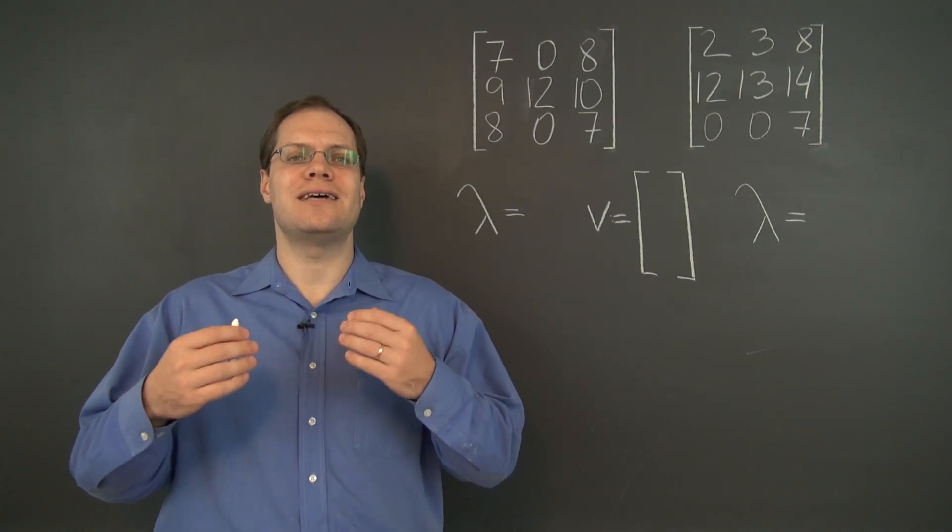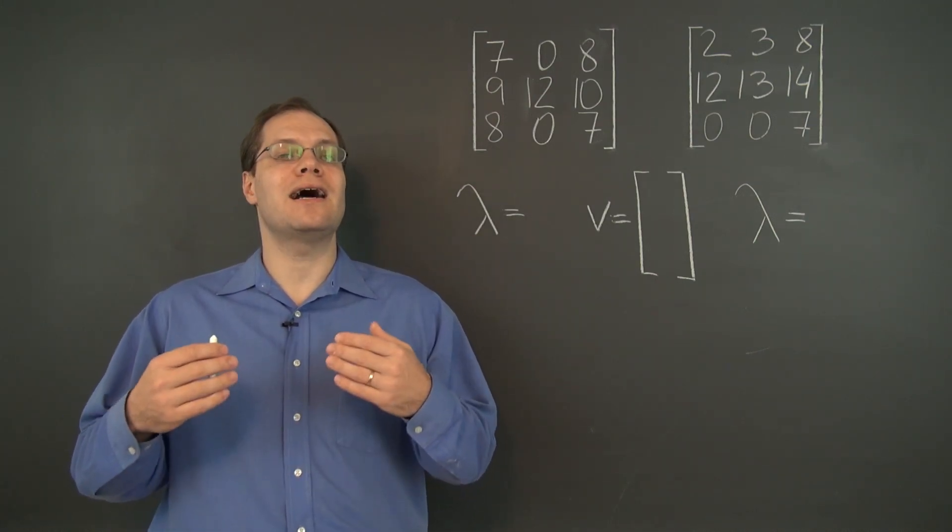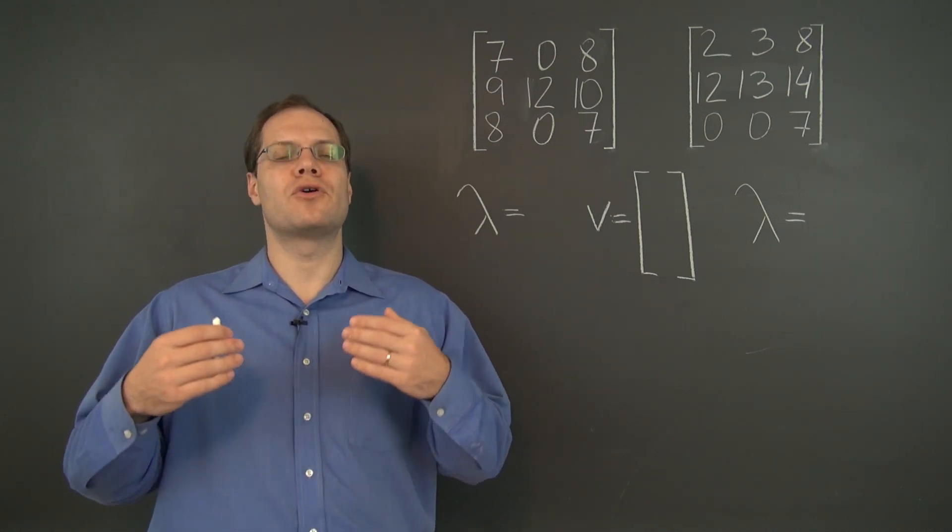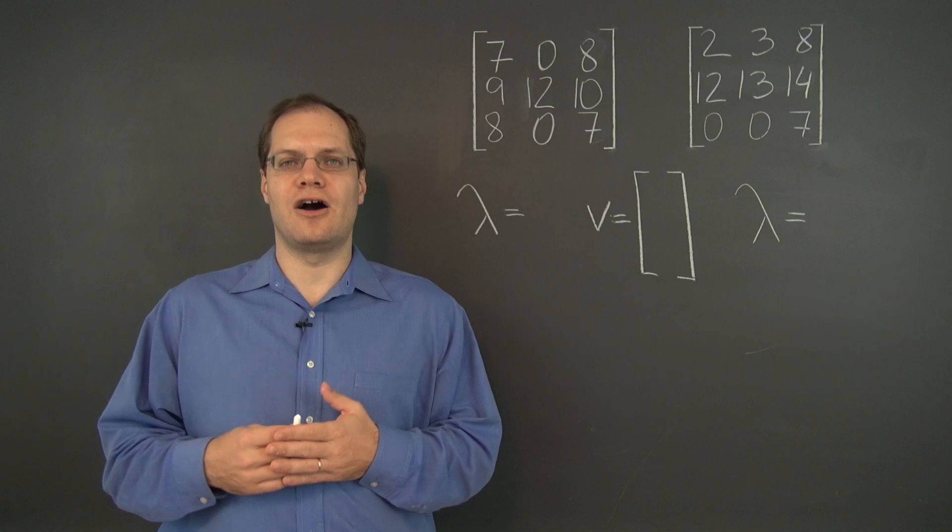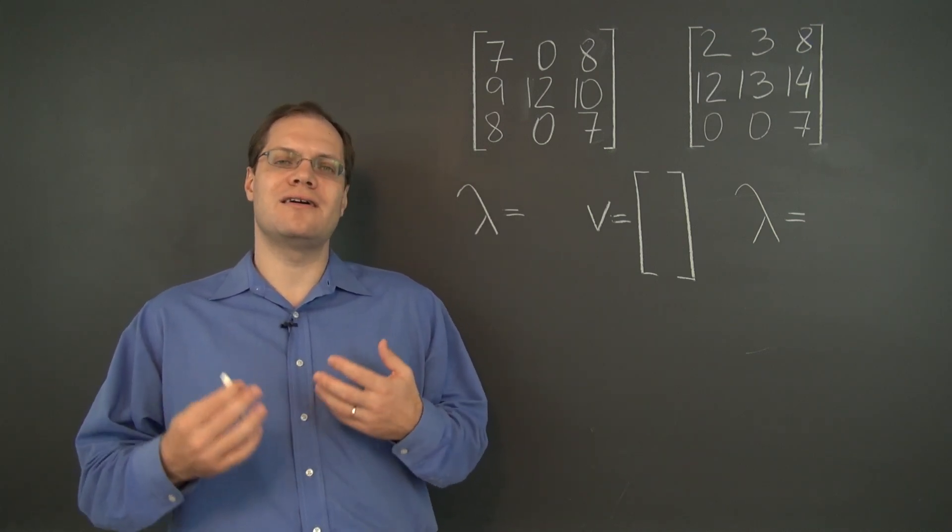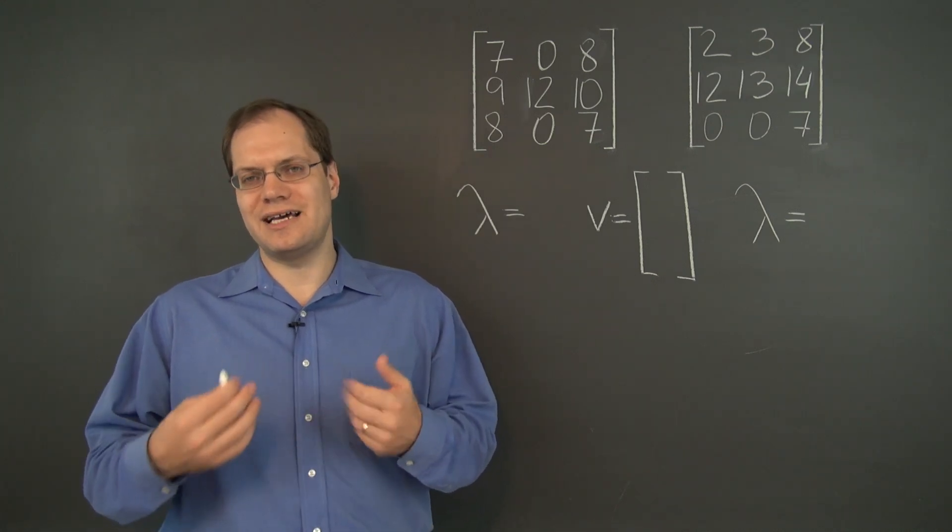So we have previously discussed diagonal matrices and that their eigenvalues appear on the diagonal and their eigenvectors form the standard basis in Rn. Well, the feature that I'll discuss now can be considered as a satellite office of a diagonal matrix.